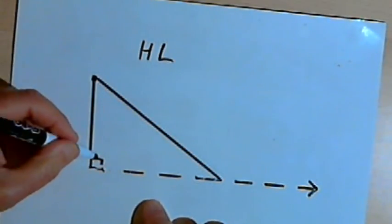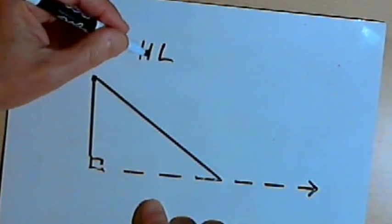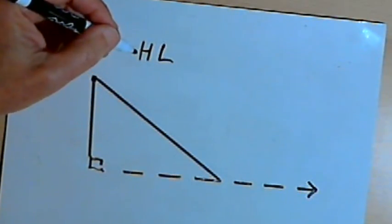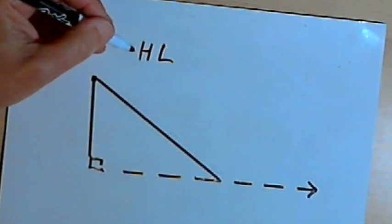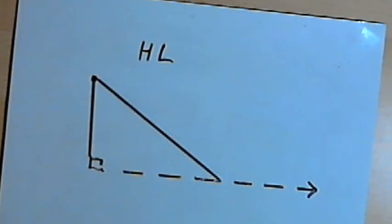So right angle will work, we refer to that as HL. Other than that, you can use side-side-angle, but be careful. You've got to have an obtuse angle. If the angle is acute, then you can't prove the two triangles are congruent. Okay. Take care. I'll see you next time.